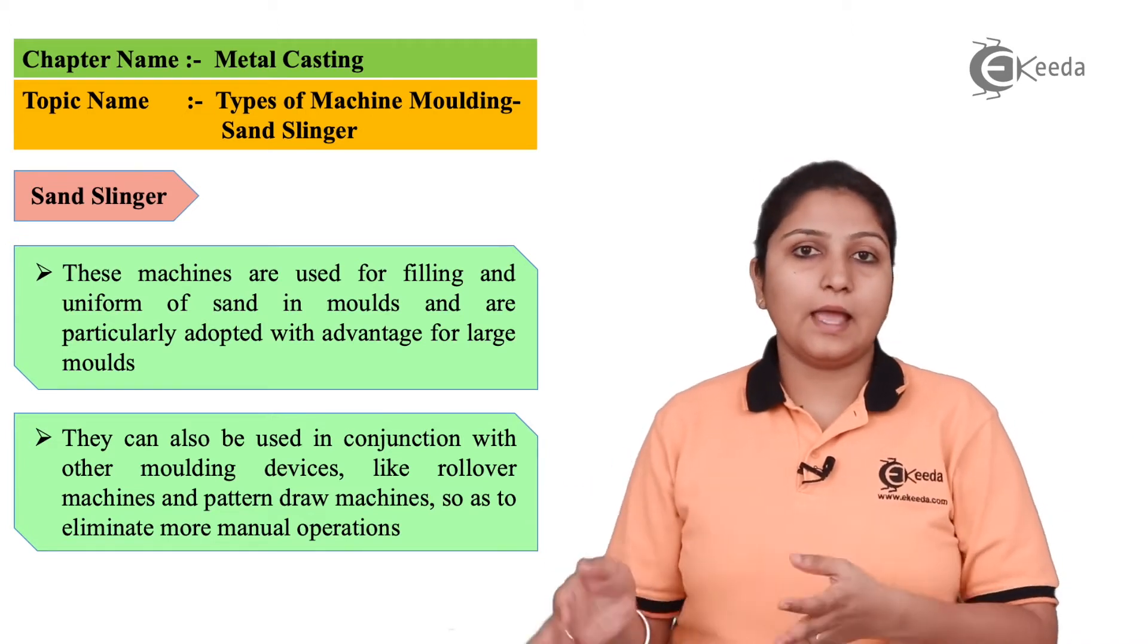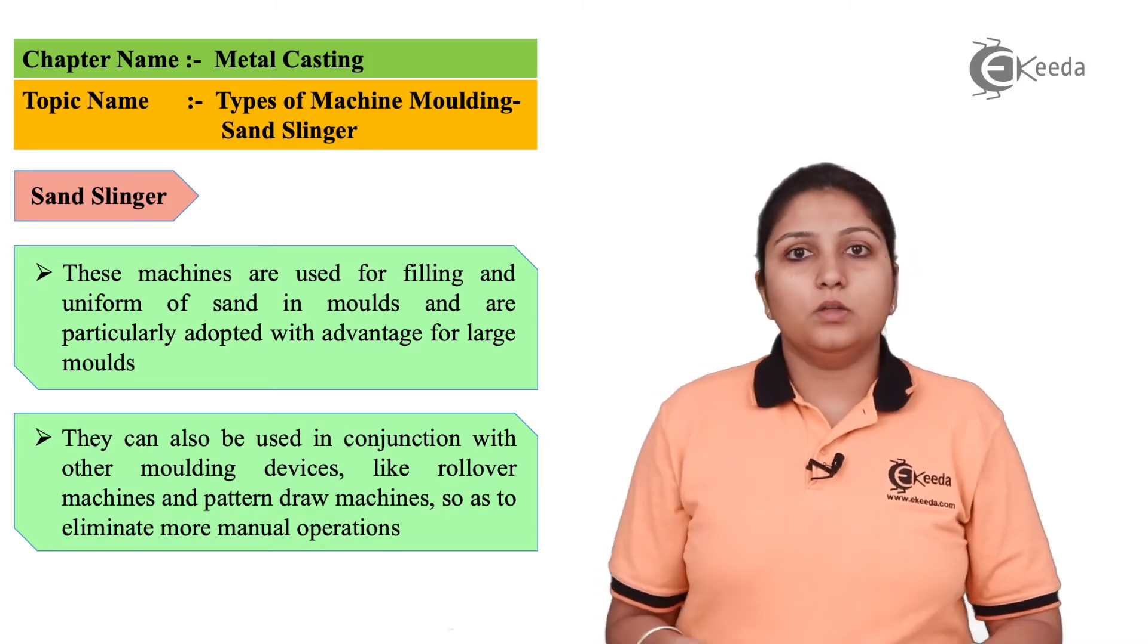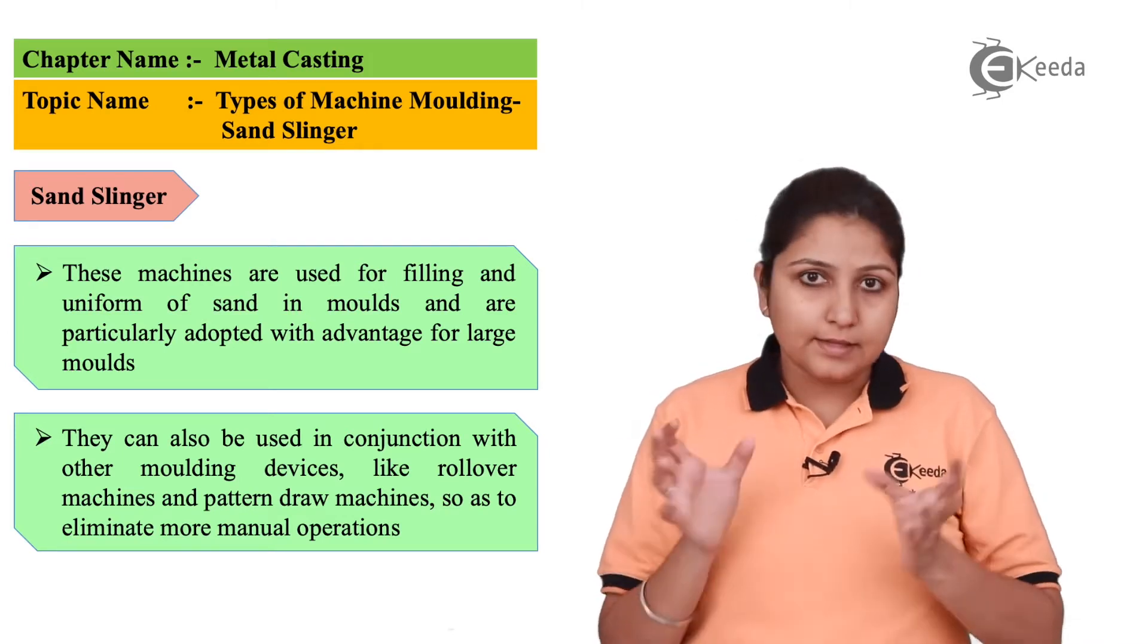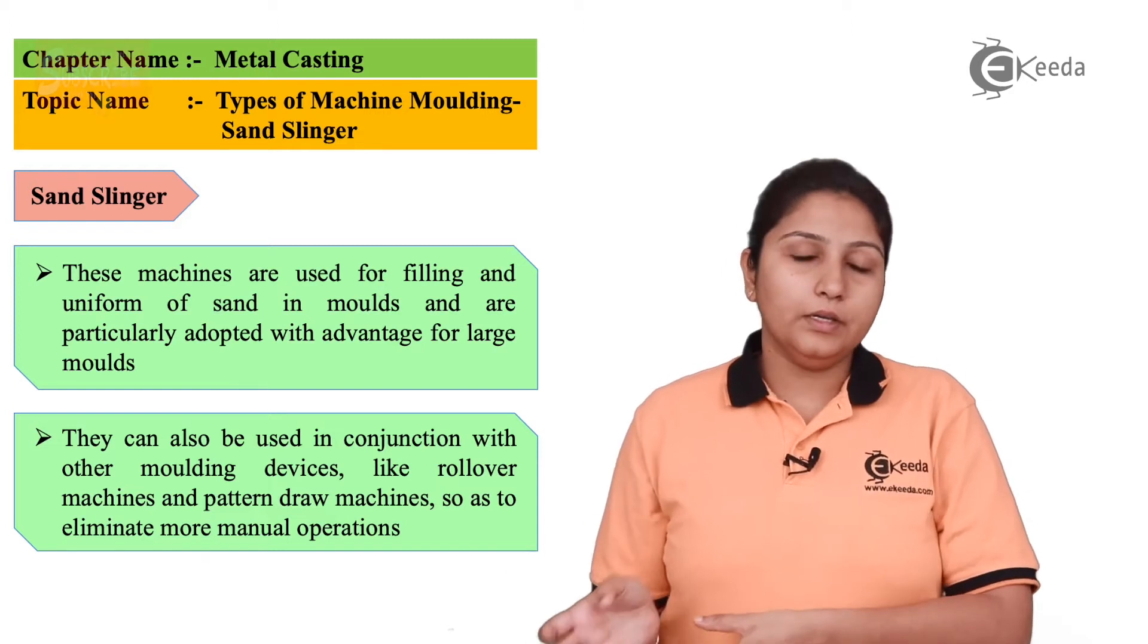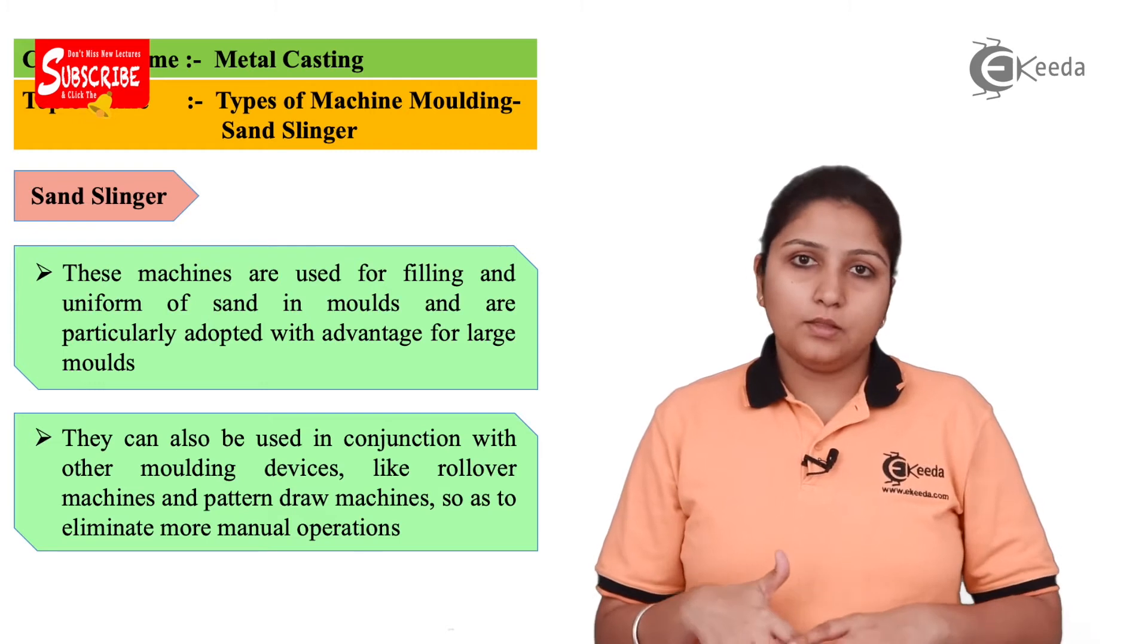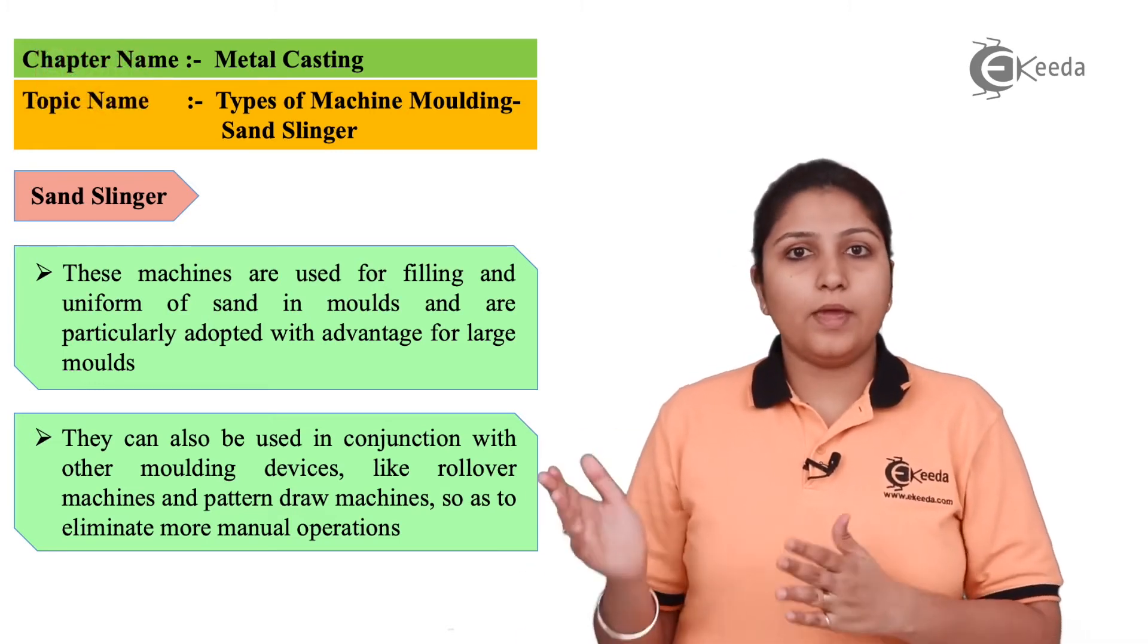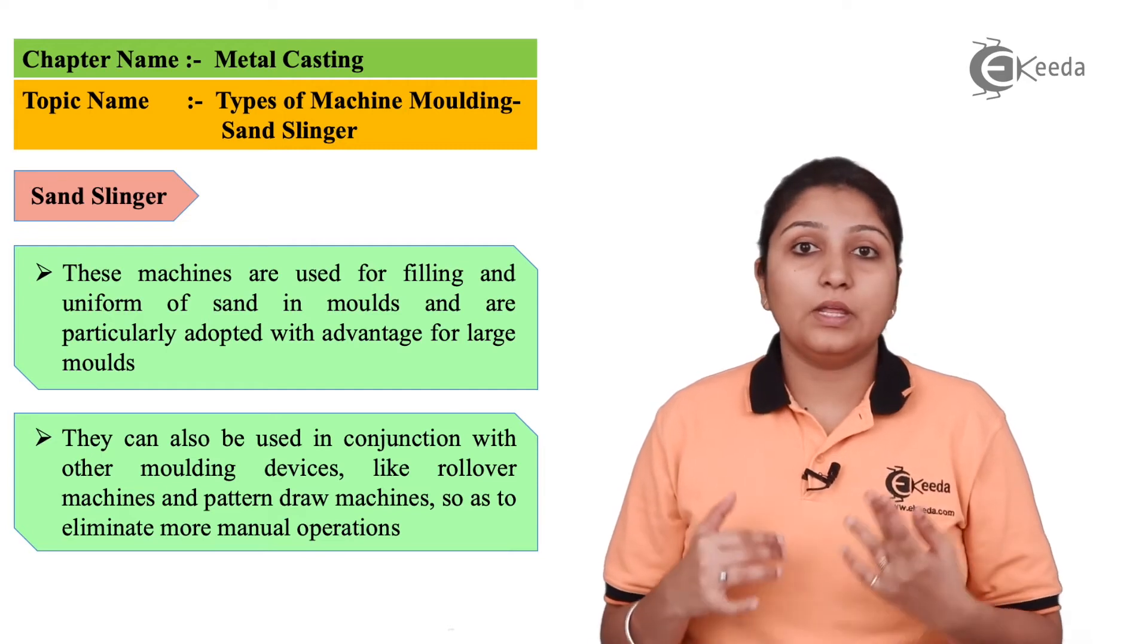The sand is mixed with other particles like clay, water, and other additives. Silica is the exact sand which is in higher quantity. All are mixed together, kept at a place, and then taken to the slinger where it's rotated at a very high speed and conveyed to another place where it can be used and molded.